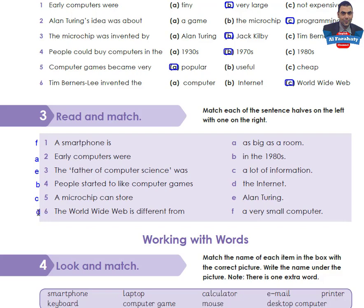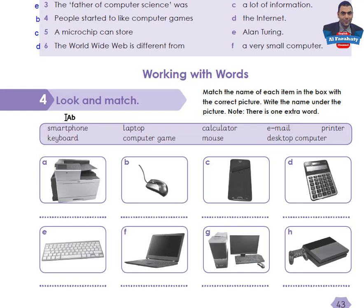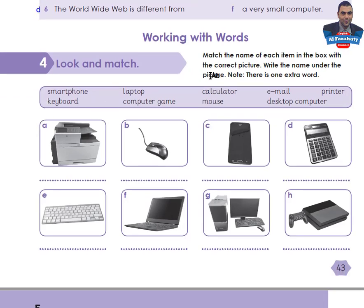Working with Words — Activity 4: Look and Match. Match the name of each item in the box with the correct picture. Write the name under the picture. Note: there is one extra word. The words are: smartphone, keyboard, laptop, computer game, calculator, mouse, email, desktop computer, computer, printer. Take your time to write the name of each item under its picture, then come back to check your answers.